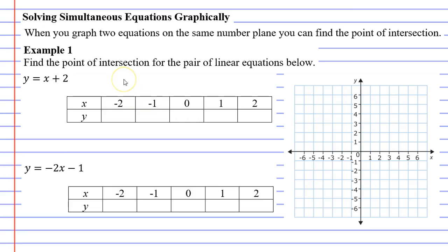If I look at the first column in my table of values, x is negative two. So when I substitute it into y equals x plus two, I get y equals negative two plus two. This gives me a result of zero.